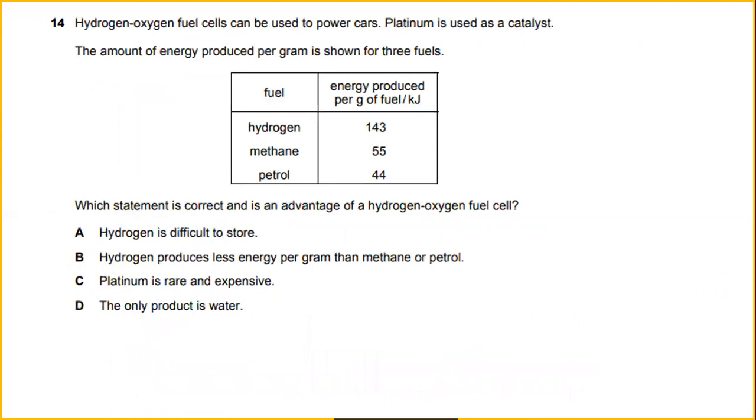Hydrogen oxygen fuel cells can be used to power cars. Platinum is used as a catalyst. The amount of energy produced per gram is shown for three fuels. Hydrogen, methane and petrol. So which statement is correct and is an advantage of a hydrogen oxygen fuel cell? What do you think for this answer? So statements are correct and advantage of the hydrogen oxygen fuel cell is the only product that is water.